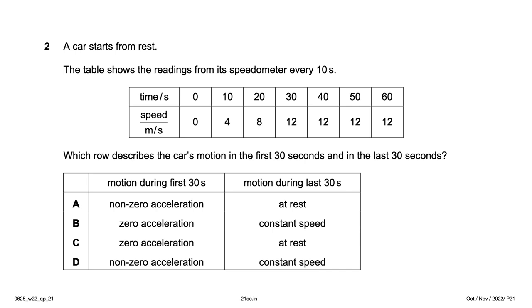The car starts from rest; the table shows the readings from its speedometer every 10 seconds. The speed is increasing: 0, 4, 8, 12 until 30 seconds, after that the speed is constant at 12. Which row describes the car's motion in the first 30 seconds and in the last 30 seconds? By looking at the table — and to help visualize, I have plotted the graph.